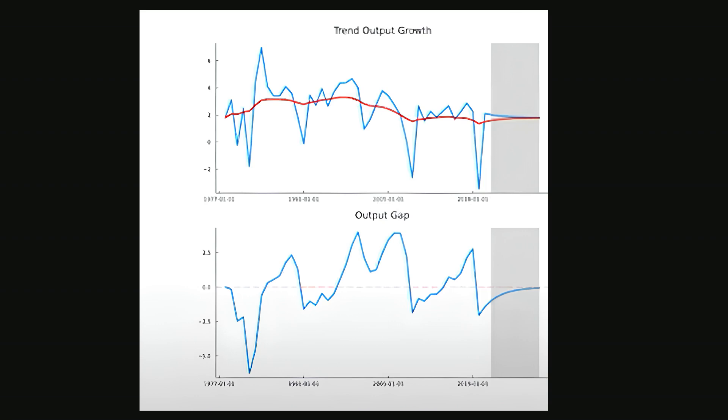This simple univariate Kalman filter serves as a rough forecasting tool but is not intended for policy implications or macroeconomic analysis. It highlights historical recessions such as the 1980s crisis, the global financial crisis, and the COVID-19 pandemic.